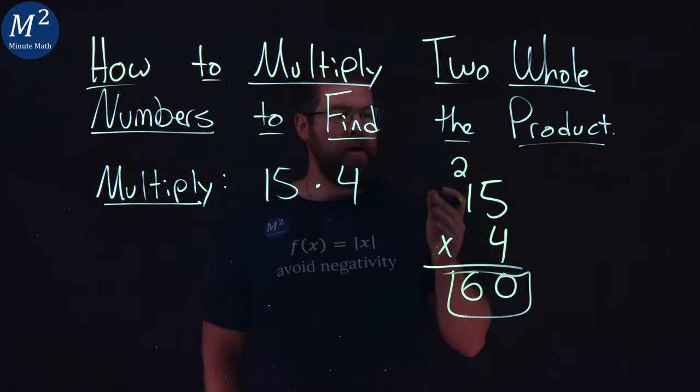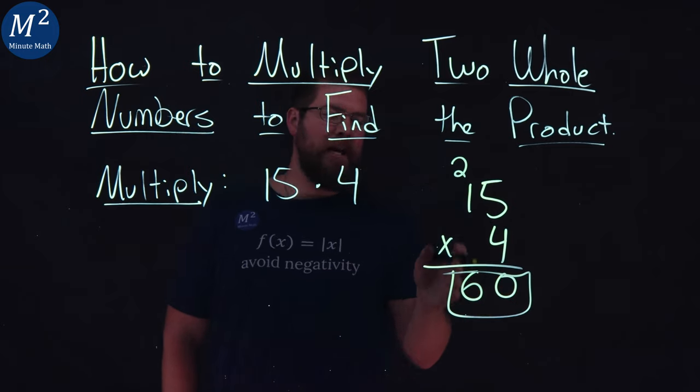That's how we multiply the traditional method of 15 times 4, which gave us 60.